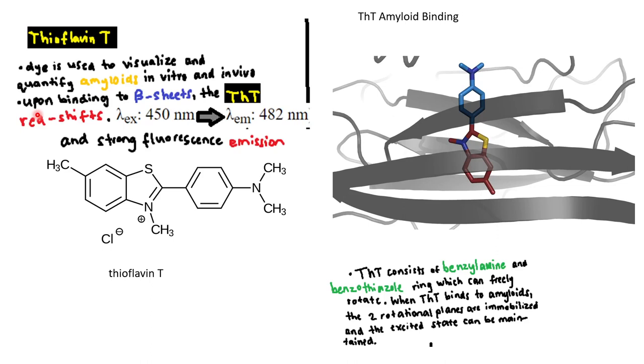Thioflavin T - what is it? Basically it's a dye that's used to visualize and quantify amyloids. You can do it in vitro and in vivo, and upon binding to beta sheets, because amyloids tend to have a lot of beta sheets.